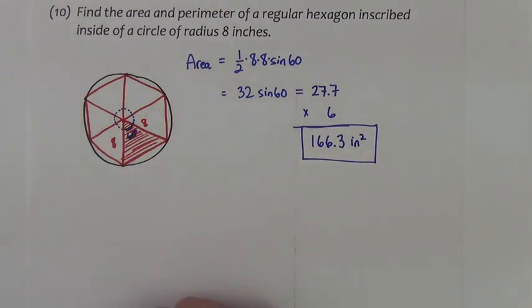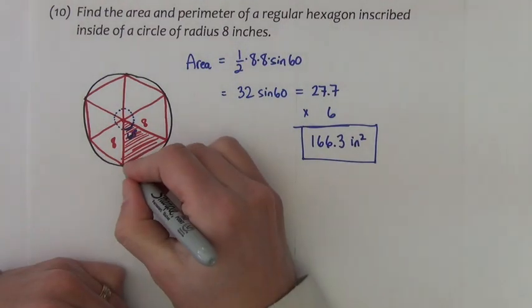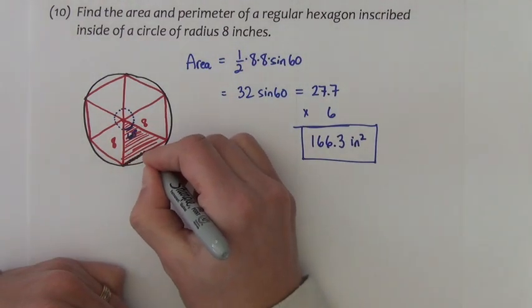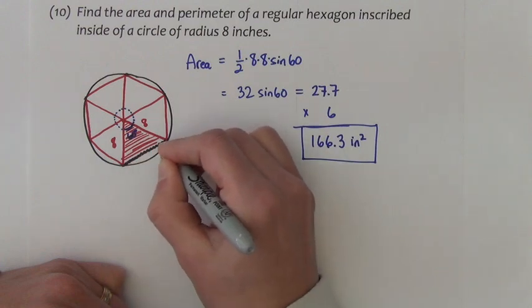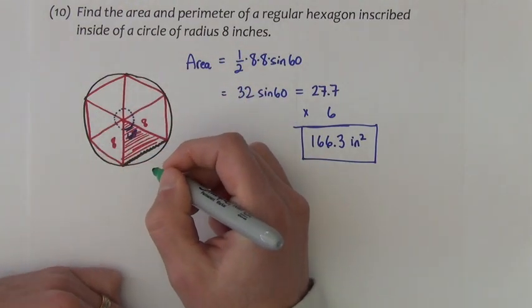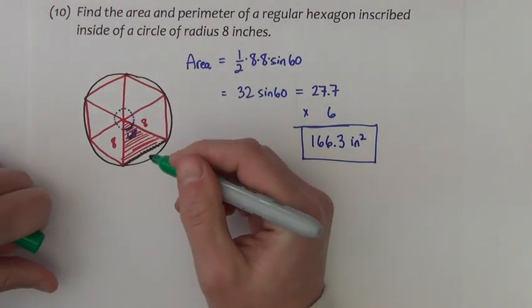Now we need to find the perimeter. So what I'm going to try and do is find the length of this edge, and I'll take it times six, as there are six edges. And to do that, I'm going to use law of cosines.